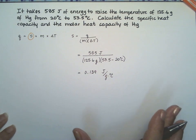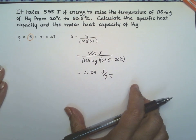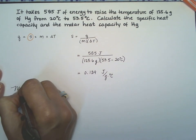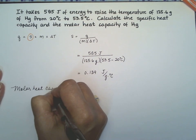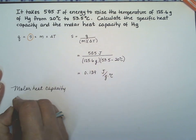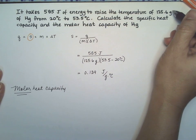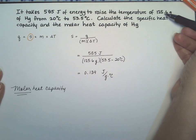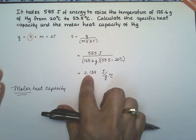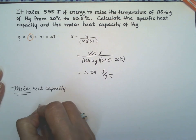We're not done because we also want to calculate the molar heat capacity for mercury. The molar heat capacity is for one mole of the compound. We have 125.6 grams, so the value we calculated refers to 125.6 grams, not to one mole. We'll use it and see how many grams are in a mole of mercury.